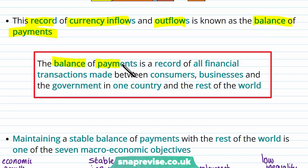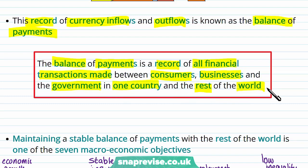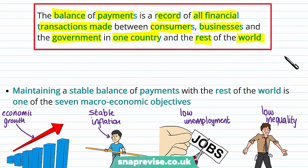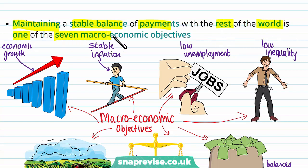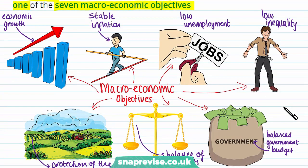The balance of payments is a record of all financial transactions made between consumers, businesses and the government in one country and the rest of the world. So we're looking at the total amount of money that's going in and out of an economy. A government is going to want to maintain a stable balance of payments with the rest of the world, and that is one of the seven macroeconomic objectives that we've identified.